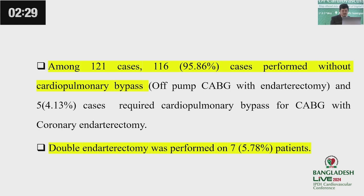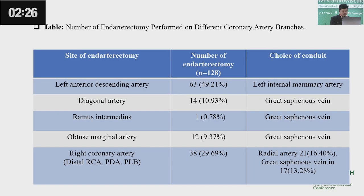This table shows the number of endarterectomies performed in different coronary artery branches. 49.21% were performed in the left anterior descending artery, with the left internal mammary artery as the conduit of choice. 10.93% were performed in the diagonal artery, 0.78% in the ramus intermedius, and 9.37% in the obtuse marginal artery, with the great saphenous vein as the conduit. 29.69% of endarterectomies were performed in the right coronary artery, with the radial artery used in 16% of cases and the great saphenous vein in 30%.